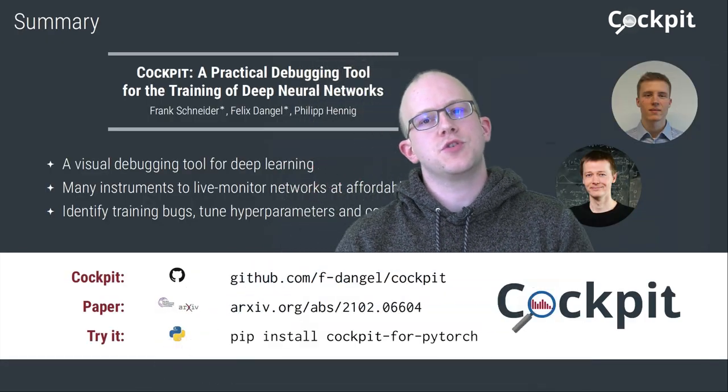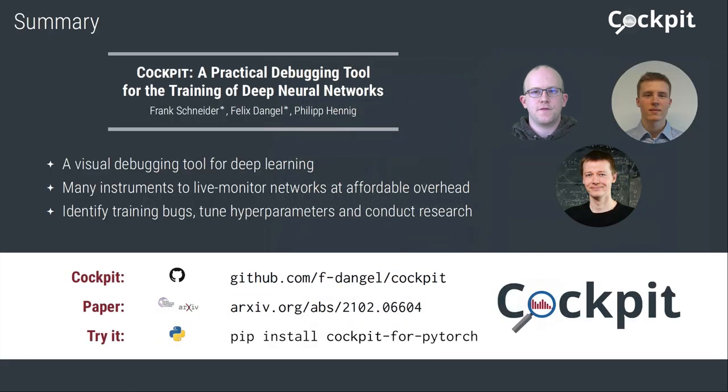To summarize our paper, training a neural network is often a painful process of trial and error. The often used performance measures only tell if the model is learning or not, but not why.